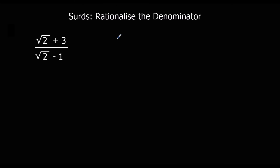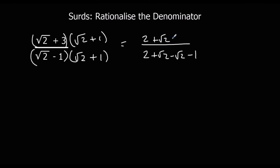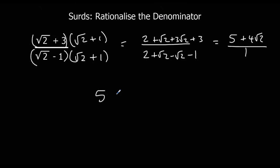Here's another example. I need to get rid of the surd from the bottom — rationalize the denominator. So I'm going to times it by root 2 plus 1 this time; that means the middle bit's going to cancel — difference of two squares — and then I times the top by the same thing. On the bottom: root 2 times root 2 is 2, root 2 times 1 is root 2, minus 1 times root 2 is minus root 2, minus 1 times 1 is minus 1. On the top: root 2 times root 2 is 2, root 2 times 1 is root 2, 3 root 2's gives 3 root 2, and 3 ones are 3. So the top is 5 plus 4 root 2, and the bottom — root 2 and minus root 2 cancel — gives 2 minus 1, which is 1. So the final answer is 5 plus 4 root 2.